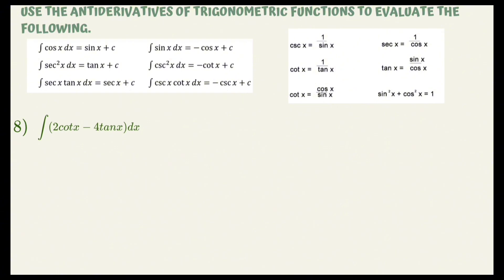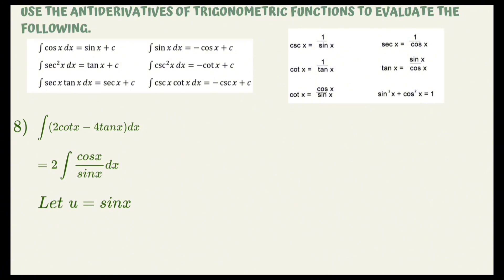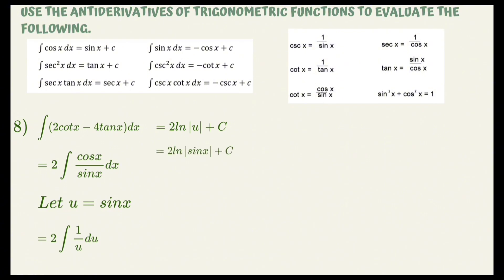For example number 8, evaluate the integral of 2 cot x minus 4 tan x dx. We separate them and first find the integral of cot x. Since there is no direct formula for cotangent, we use a trigonometric identity. So 2 cot x dx is equivalent to 2 integral of (cos x / sin x) dx. Let u = sin x, so du = cos x dx. Following the integral of du over u, we get 2 ln|u| + C. Substituting back, we have 2 ln|sin x| + C.